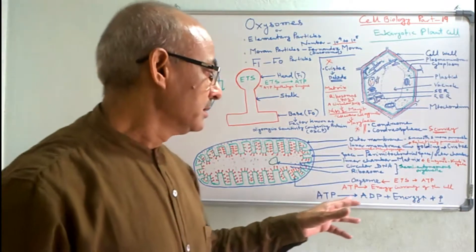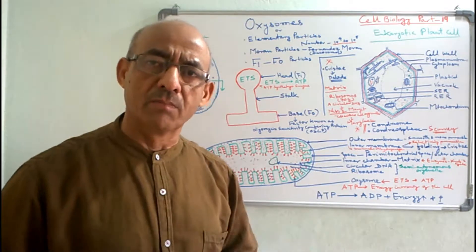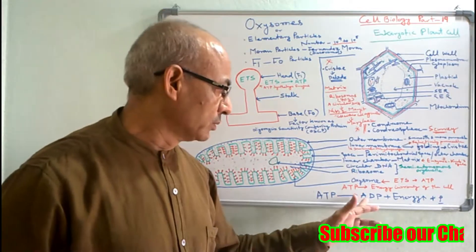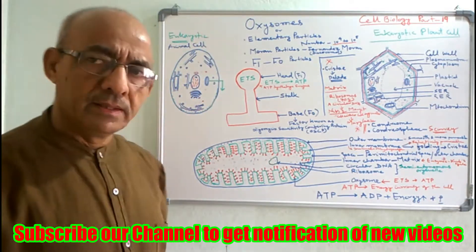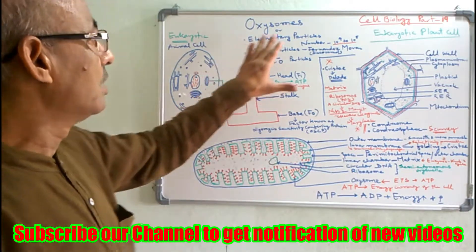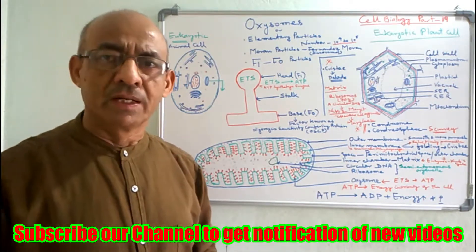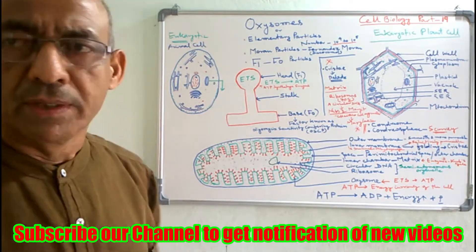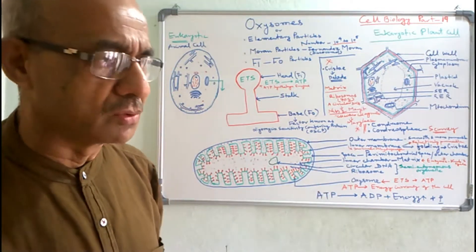They are called as energy currency of the cell because whenever energy is required in the cell as well as the entire body, they release energy by converting themselves into ADP by releasing phosphate molecules. Because all of the head parts of the oxysomes of the mitochondria are generating and storing energy, they serve as a powerhouse. So all of the mitochondria are called as the powerhouse of the cell.